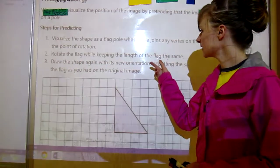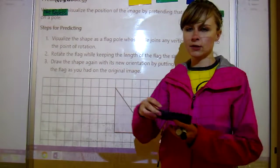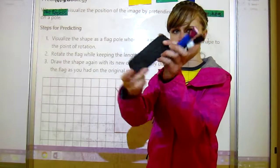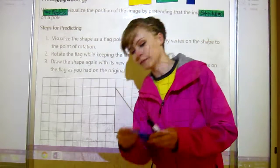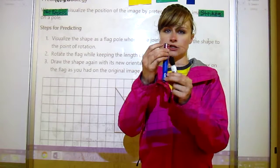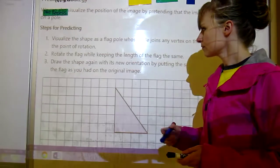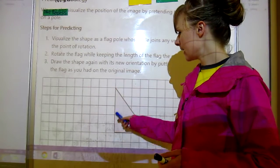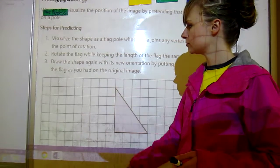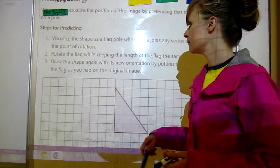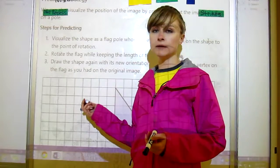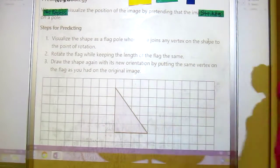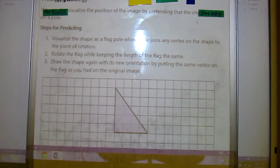What you want to do is imagine that it's on a flagpole. You could even draw a line just so you can see it, and then rotate the flag while keeping the length of the flag the same. When you rotate the flagpole, it doesn't change the length—that's important. Once you rotate the flagpole, take a look at how the shape is related to the flagpole to begin with, and then draw it again.